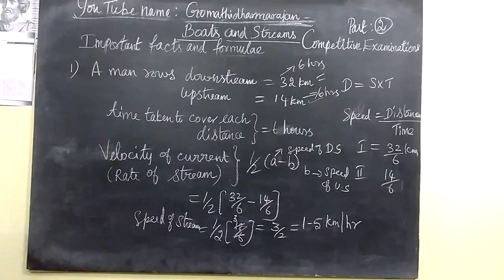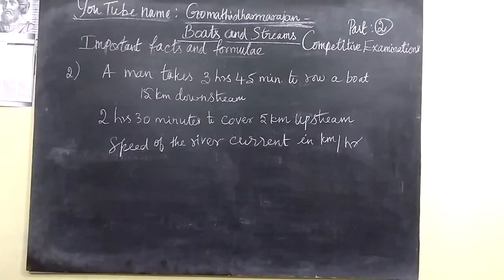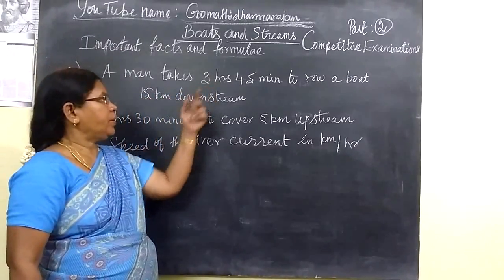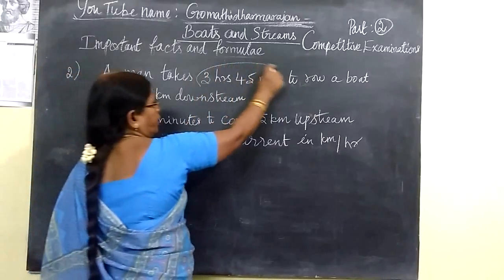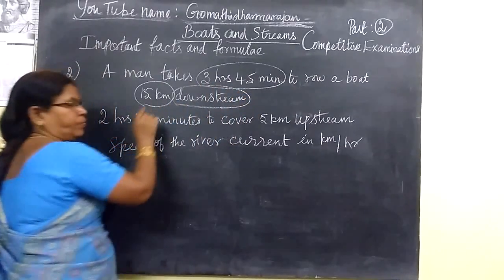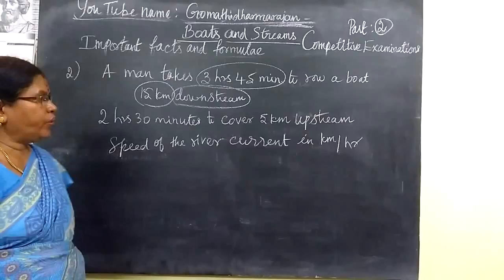And we see one more problem. So now we see the second one. A man takes 3 hours 45 minutes to row 15 km downstream. The time taken is 3 hours 45 minutes.